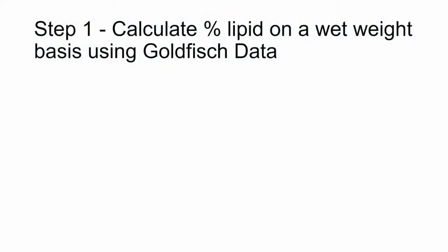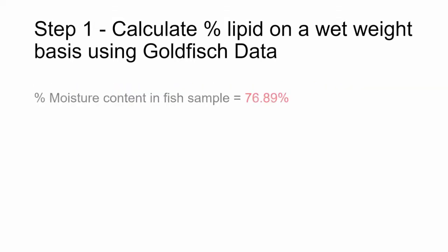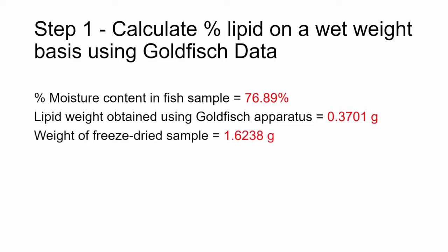First, calculate the percent lipid in the sample on a wet weight basis. To do this, use the weight of the total lipids from your freeze-dried sample obtained from the Bligh-Dyer method performed in exercise 1. You will also need the moisture content of the fresh fish sample, which will be given to you by your instructor. In this example we will use 76.89% for the moisture content, 0.3701 grams as our total lipid weight, and 1.6238 grams as the weight of our freeze-dried sample.